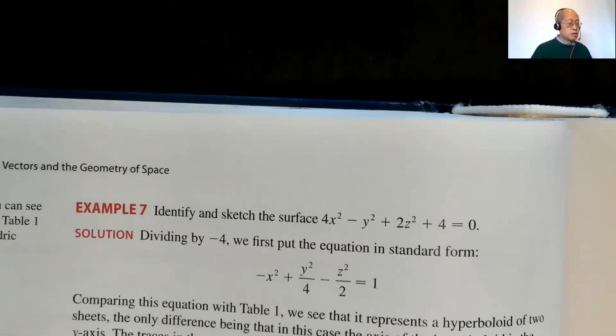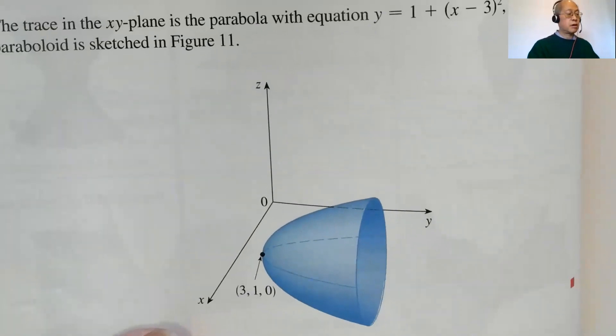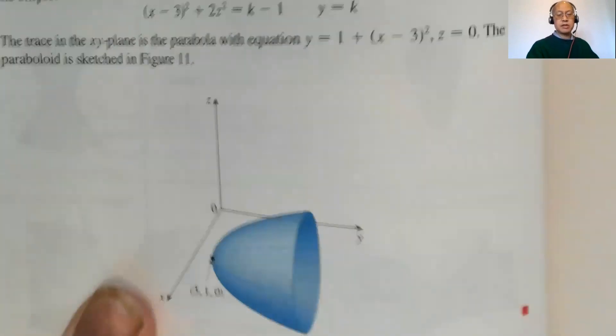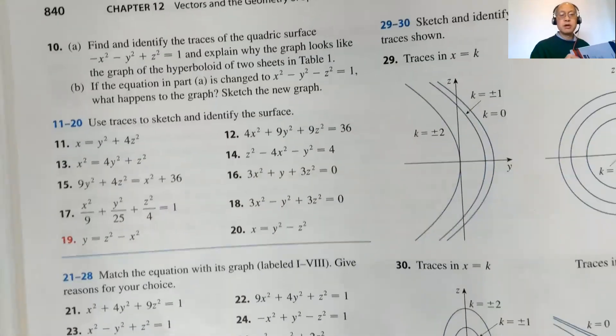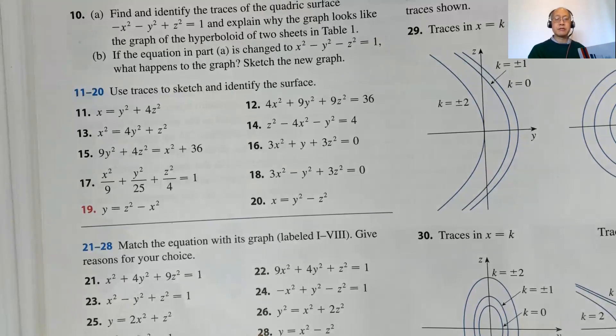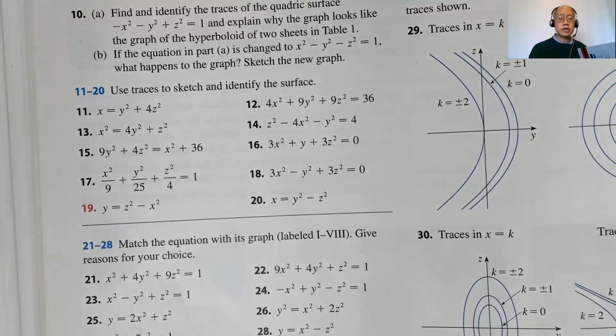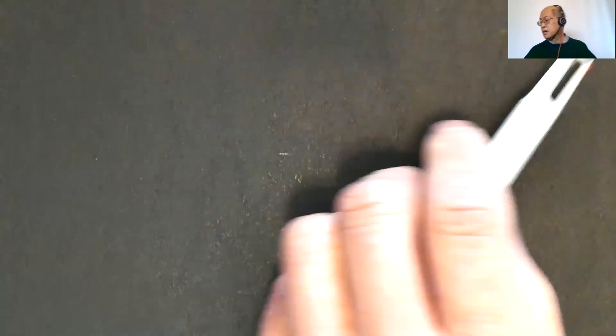So what are we going to do? We're just going to take traces on the coordinate planes. For the homework, we're doing problems 11 and 20 — none of the answers are in the back of the book. We'll use traces to sketch and identify the surface. We're just going to trace in the coordinate planes: X equals zero (the YZ plane), Y equals zero (the XZ plane), and Z equals zero (the XY plane).